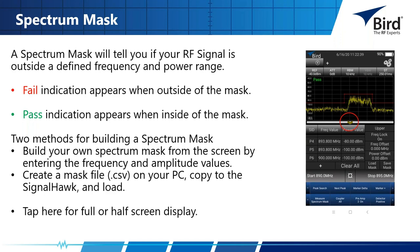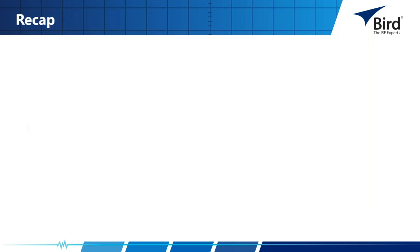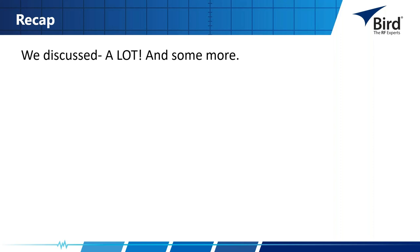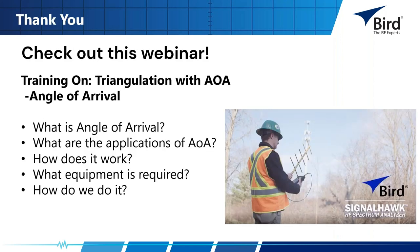Tapping the arrow or diamond in the middle lets you alternate between full screen and half screen views. To recap: we discussed what is a spectrum analyzer, went over key terms and analyzer basics, and covered the measurements to use. Next week there will be a webinar on triangulation with the AOA (angle of arrival) spectrum analyzer — covering what angle of arrival is, its applications, how it works, the equipment required, and a step-by-step walkthrough.